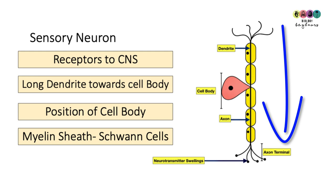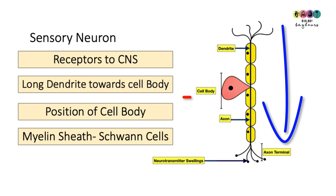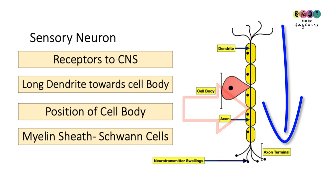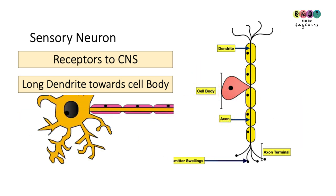You should be able to draw and label the sensory neuron — don't forget the arrow. Know that it's carrying impulses towards the central nervous system, that there's one long dendrite towards the cell body, and then the axon away from the cell body. Know all about the Schwann cells and myelin sheath, and note the position of the cell body.